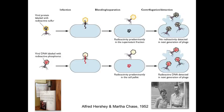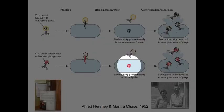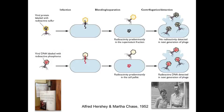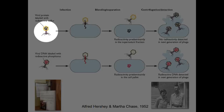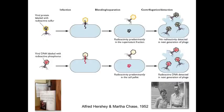When they labeled the DNA, they would infect E. coli very briefly and then use a blender to shear off the infecting phage. They only let the phage attach briefly — enough to put the genetic information in the cell. The radioactivity was predominantly found in the cell after a brief infection when the DNA was labeled, and the DNA was detected in the next generation of phage. When they labeled the protein coat, it did not remain cell-associated and was never passed on to the next generation. This is called the Hershey-Chase experiment.